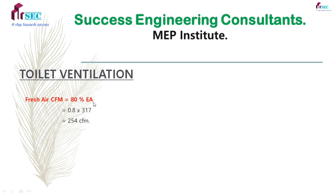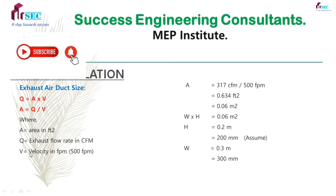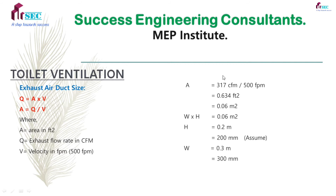Fresh air is 80 percent of exhaust air, so we get 254 CFM. Now, as per the continuity equation, Q equals A into V, so A equals Q divided by V, where Q is exhaust flow rate in CFM and V is velocity in feet per minute. So A equals 317 divided by 500 feet per minute, giving 0.634 square feet. Converting to square meters as well.